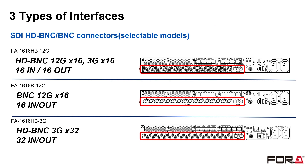The remaining 8-in, 8-out are compatible up to 3G. The FA1616-B12G has 16 connectors of the normal BNC type. Each of them can be switched to be used as input or output, and all connectors support up to 12G.